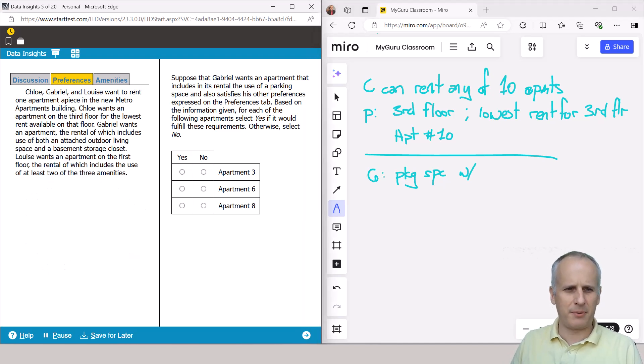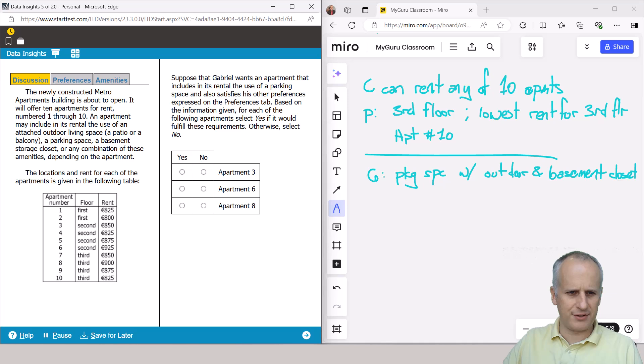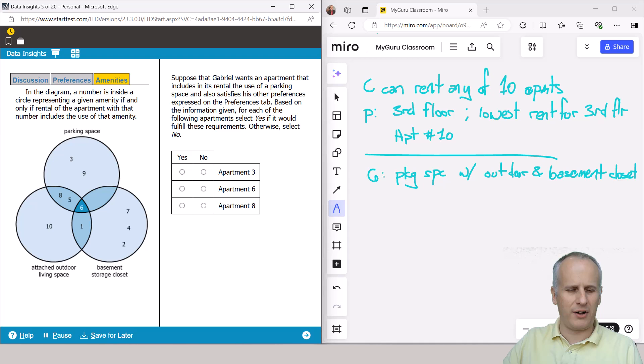And we've got Gabriel wants an apartment, the rental of which includes use of both an attached outdoor living space. So we need outdoor and a basement storage closet. So we'll just say basement closet. So now we've got to go to the discussion and make sure that there's nothing there that would be relevant. And we see no. So we need a parking space. And if we're looking at a parking space, basement storage closet and outdoor living, there's nothing here and we can move on to the amenities.